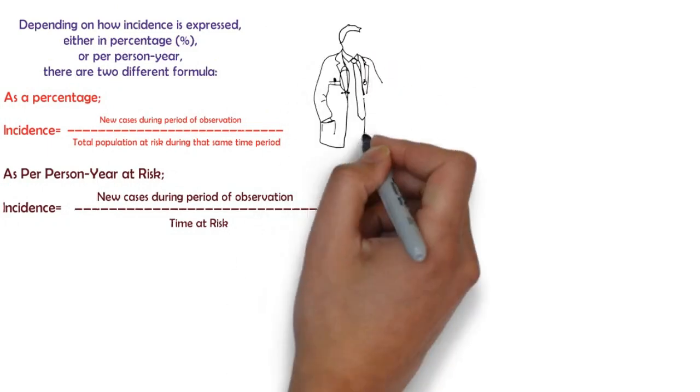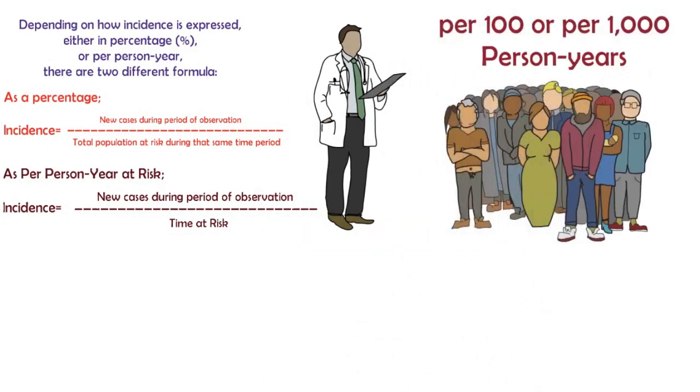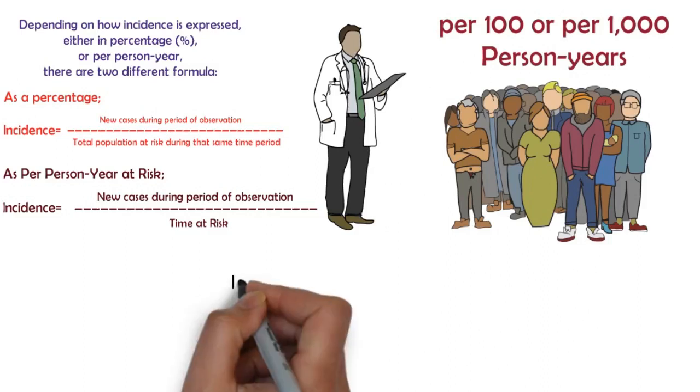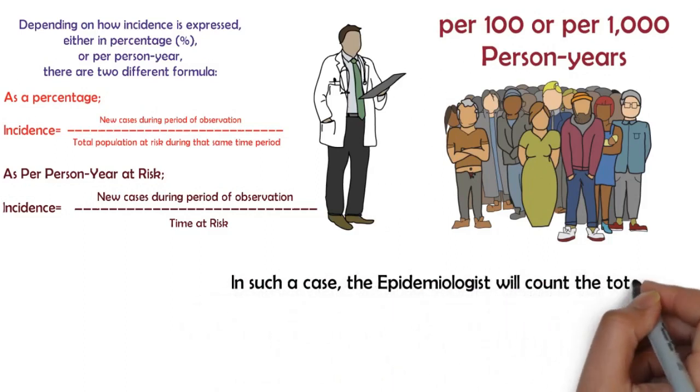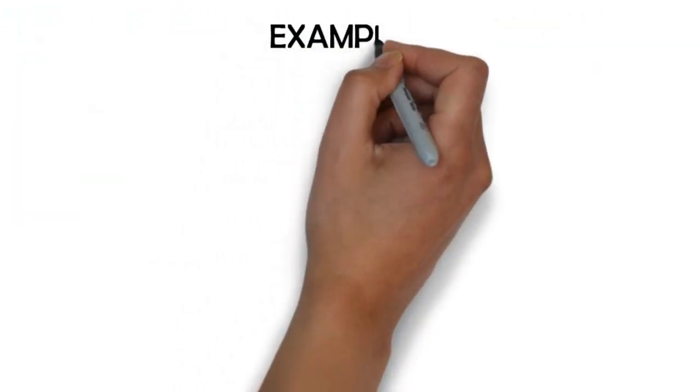Often you can read about the incidence of a health event as a certain number of cases per 100 or 1,000 person-years. In such a case, the epidemiologist would count the total years the healthy population was at risk and divide the new cases by this amount of person-years at risk. Let's quickly look at two simple examples.